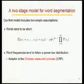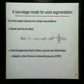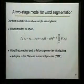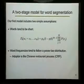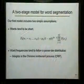Here's our first model for word segmentation. The first assumption is that words tend to be relatively short — we use a unigram phoneme model where the probability of a word is the product of phoneme probabilities, with p-hash as the probability of a word boundary. Once we've generated the words, we assign frequencies by assuming they follow a power-law distribution, using the Chinese restaurant process as the adapter.